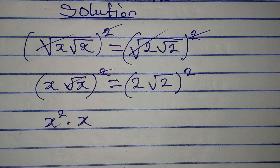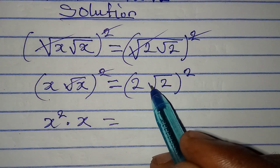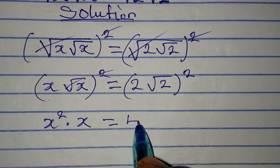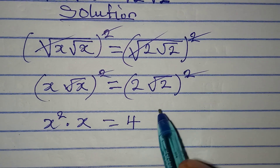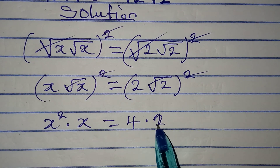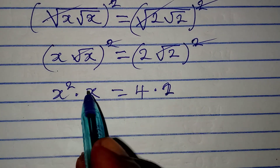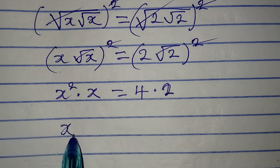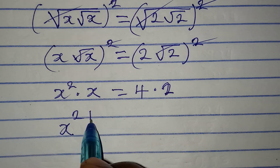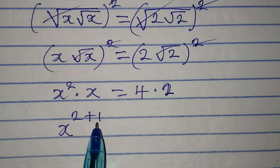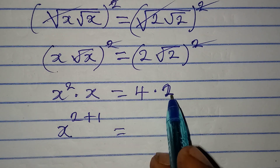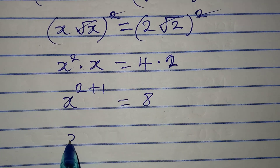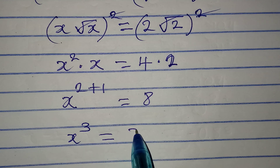We now have x squared times x on the left. We pick one of the bases and add exponents: 2 plus 1, because the power of x is 1. On the right, 2 squared gives us 4, and 4 times 2 gives us 8. So we have x to the power of 3 equal to 8.